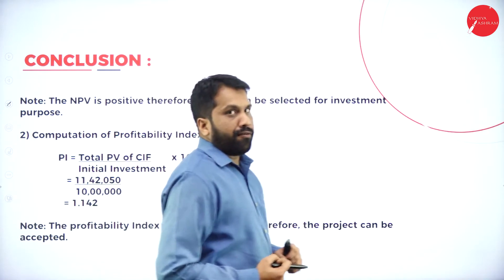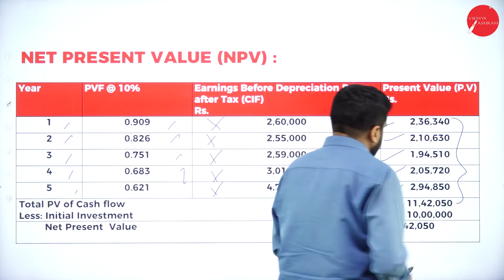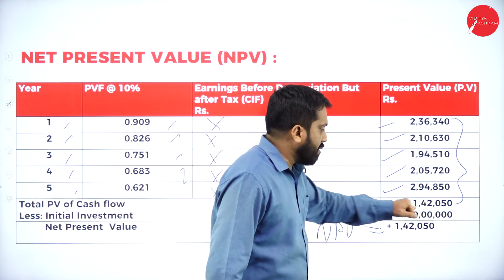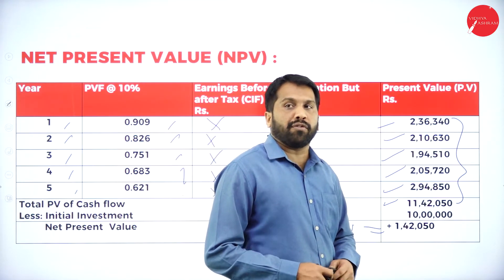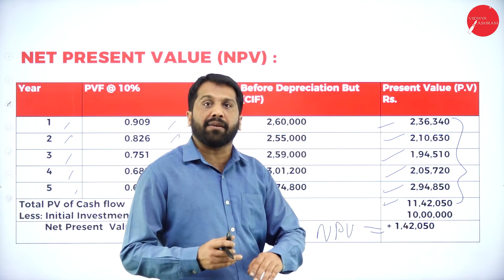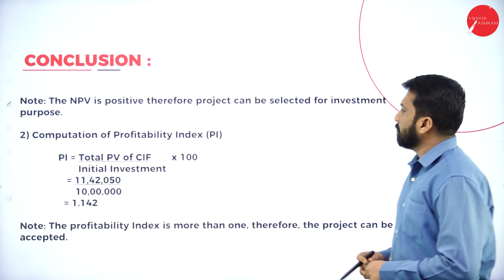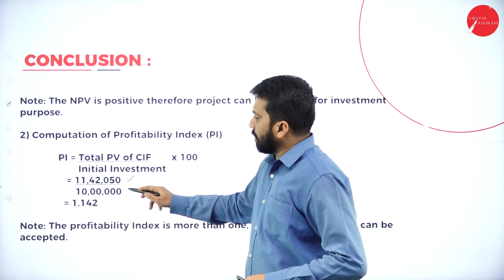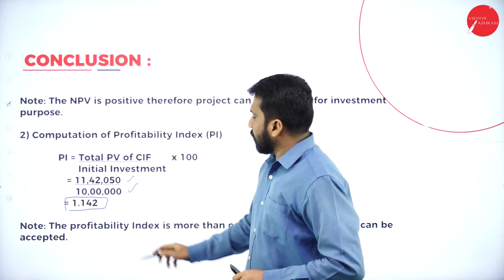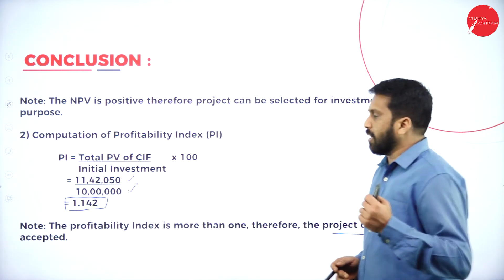Now find the profitability index. Instead of deducting, you divide: 11 lakh 42 thousand 50 divided by 10 lakh = 1.142. The profitability index is more than 1, therefore the project can be accepted. For every 1 rupee spent, you get back 1 rupee 14.2 paise in return.